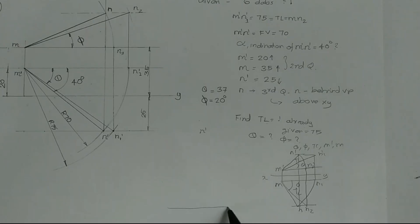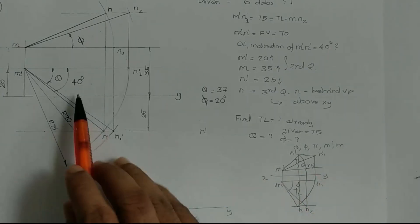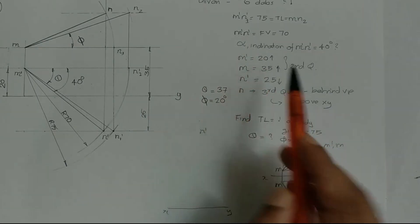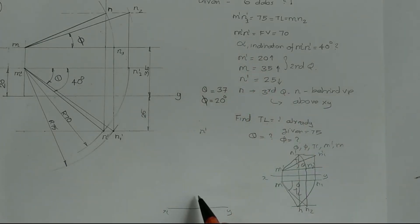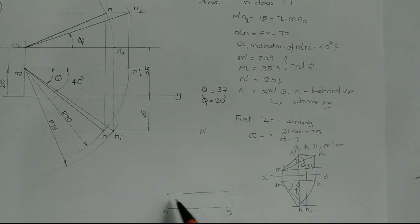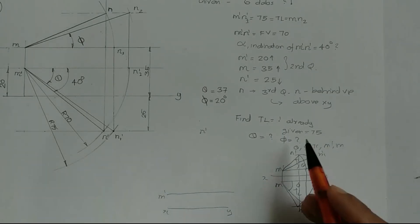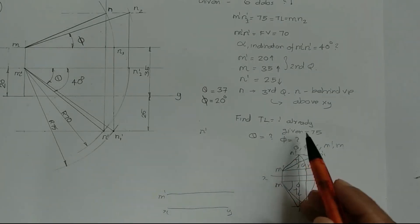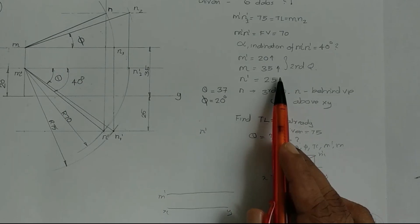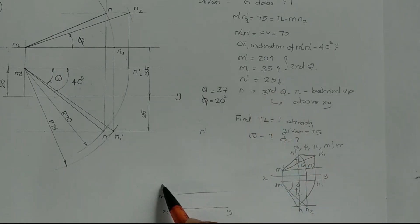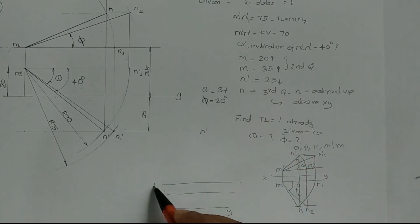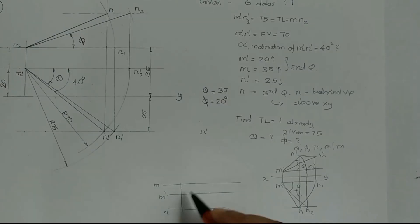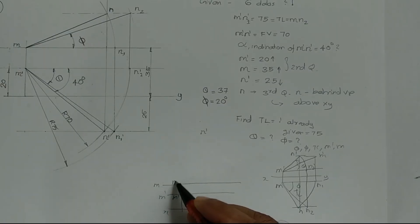First, draw the XY line. Given data: M' is located 20mm above the XY line. M is located 35mm behind VP, that is 35mm above the XY line in the top view. This gives the location of M' and m.